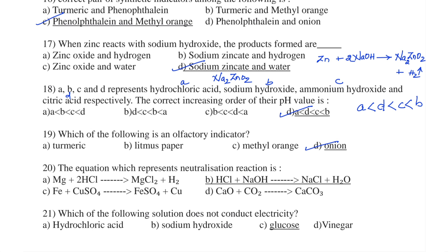Question number 20. The equation which represents a neutralization reaction is: Option A — Magnesium reacting with hydrochloric acid to give magnesium chloride and hydrogen gas; Option B — Hydrochloric acid and sodium hydroxide to give sodium chloride and water; Option C — Iron with copper sulfate to give ferrous sulfate and copper; Option D — Calcium oxide and carbon dioxide to give calcium carbonate. A neutralization reaction is between an acid and a base to give salt and water. The reaction between hydrochloric acid and sodium hydroxide giving sodium chloride and water is the answer — Option B.